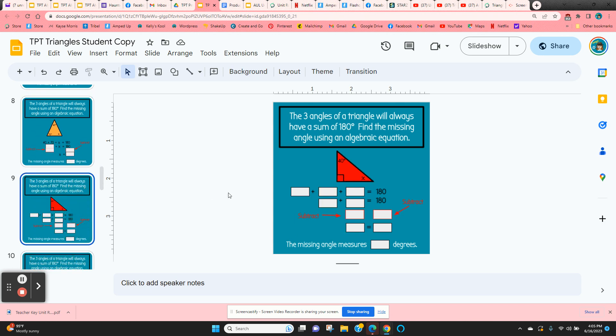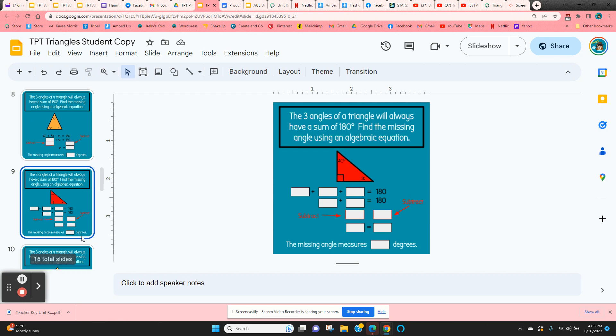The next one, they have to do a little bit more work. The equation is not given to them. Also, they have to know that this is a 90 degree angle. So 40 plus 90 plus x, solve for x.